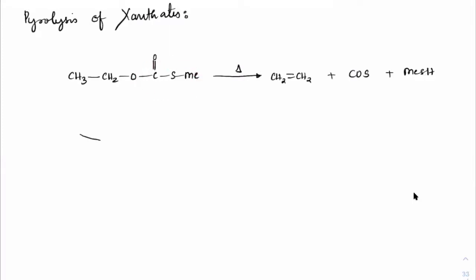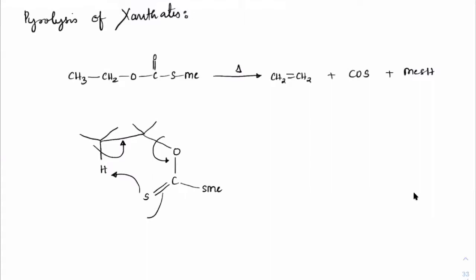In xanthates, the Hofmann product will also be the major product. The mechanism: oxygen is connected to carbon with C=S and S–Me. The hydrogen is extracted, the C–C bond forms the double bond, and the C–O bond on the oxygen side breaks — not the sulfur side. The lone pair from C=S goes back to sulfur, forming COS and MeSH.